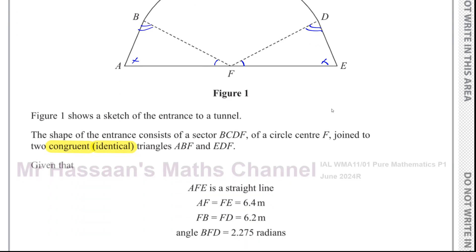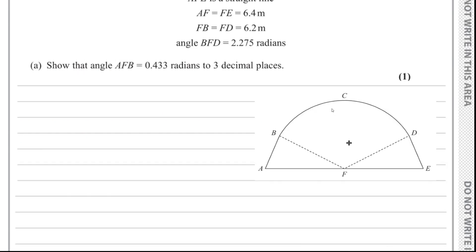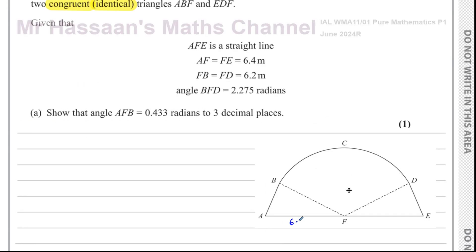Given that AFE is a straight line, AF equals FE equals 6.4 meters, and FB equals FD equals 6.2 meters. Also, angle BFD equals 2.275 radians — BFD, with F in the middle as the vertex, so the angle goes from B to F to D. We're dealing with radians here — very important.